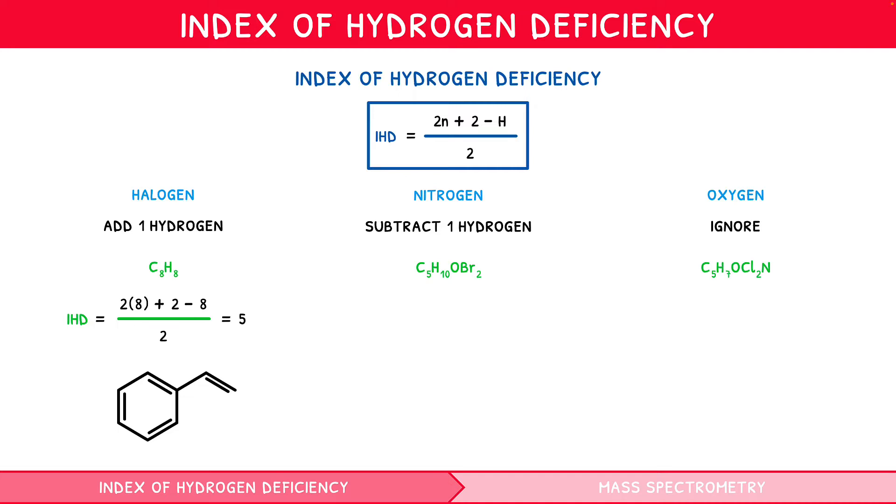Within C5H10OBr2, there are 5 carbon and 10 hydrogen atoms. However, there are an additional 2 halogens, and so we substitute in a value of N as 5 and H as 12. Simplifying, we would get an IHD of 0, signifying that the molecule has no double bonds or rings. Thus, a possible structure would be as follows.